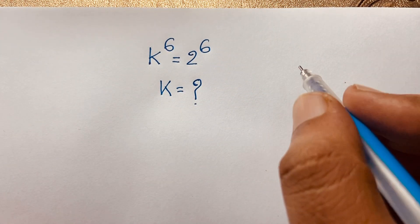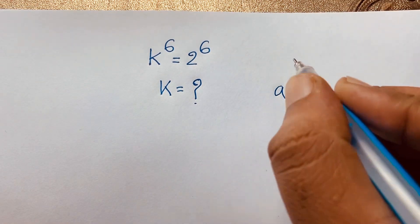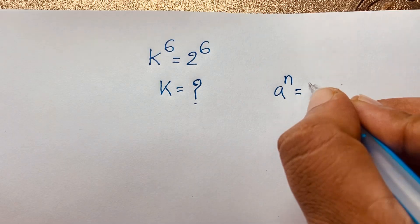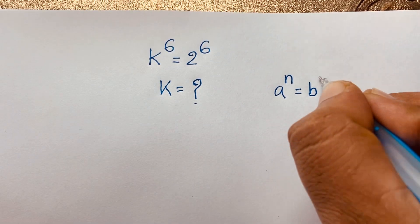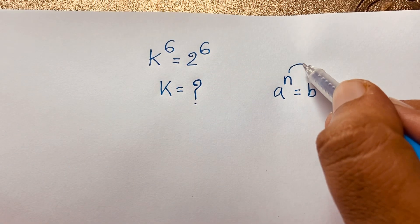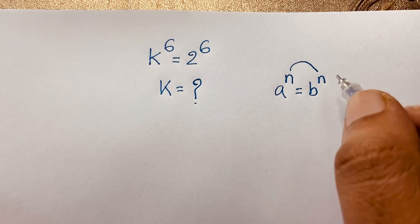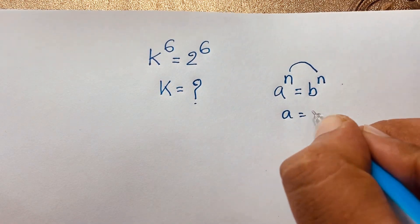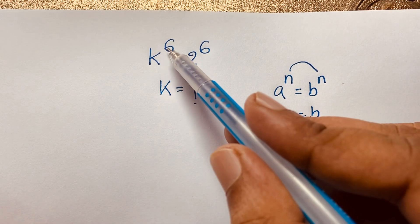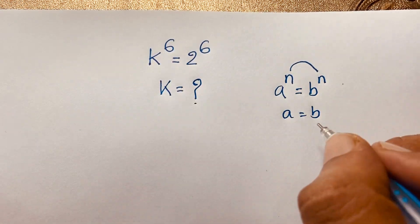First of all, we know that if a to the power n is equal to b to the power n, and when the exponent is equal, you can say that the base is equal — so a is equal to b. In this expression, the exponent is the same, so k is equal to 2.